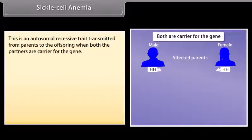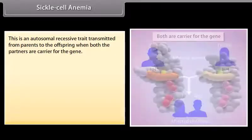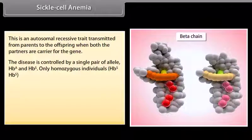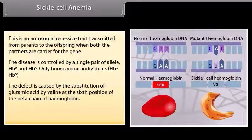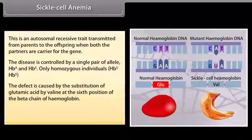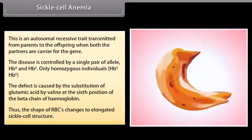Sickle cell anemia is an autosomal recessive trait transmitted from parents to offspring when both partners are carriers for the gene. The disease is controlled by a single pair of alleles, HbA and HbS. Only homozygous individuals (HbS HbS) are affected. The defect is caused by the substitution of glutamic acid by valine at the sixth position of the beta chain of hemoglobin, causing the shape of RBCs to change to an elongated sickle cell structure.